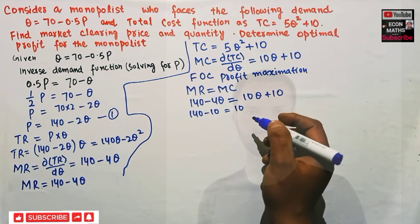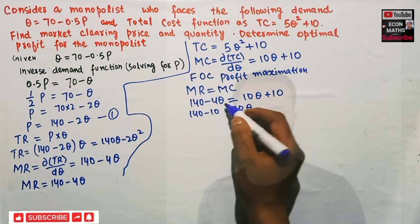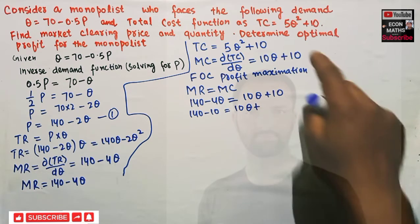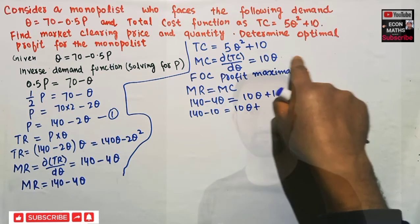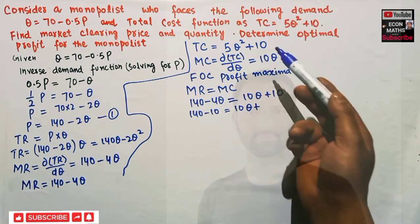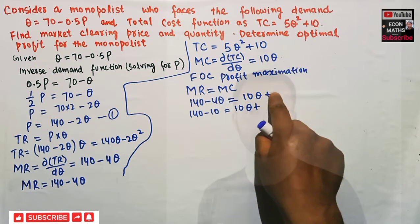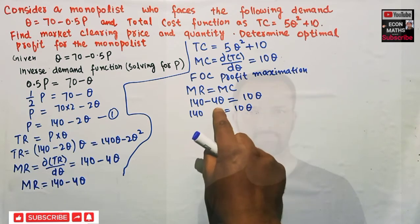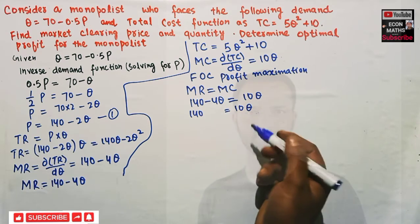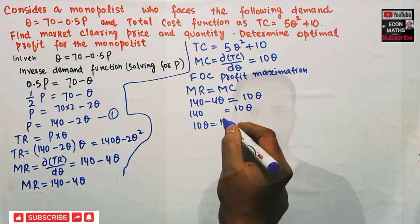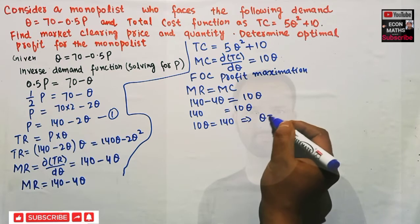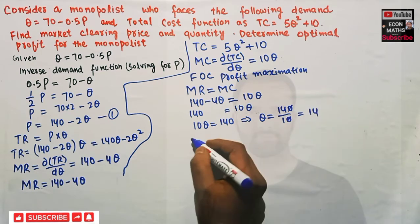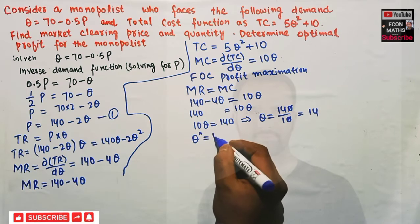Actually, since the derivative of the constant 10 is zero, the marginal cost is simply 10Q. So the equation becomes 140 = 10Q + 4Q, which means 14Q = 140, giving Q = 140/14 = 14. So our equilibrium market clearing quantity is Q = 14.